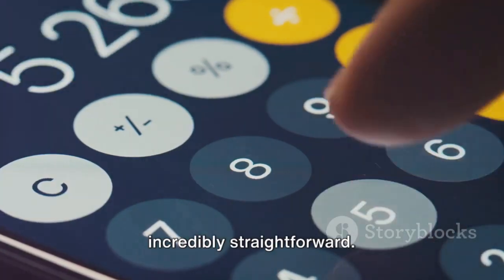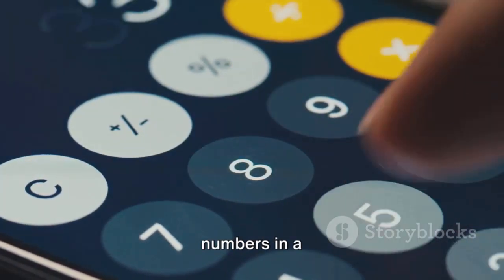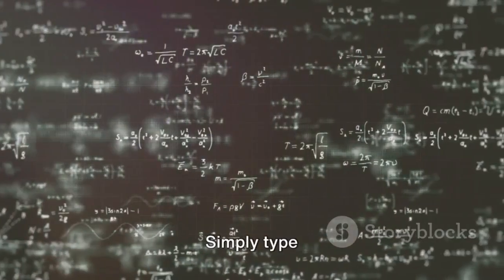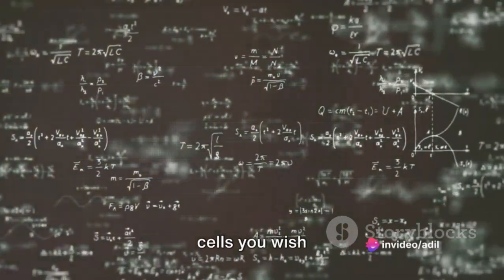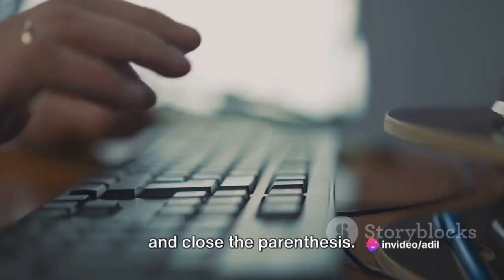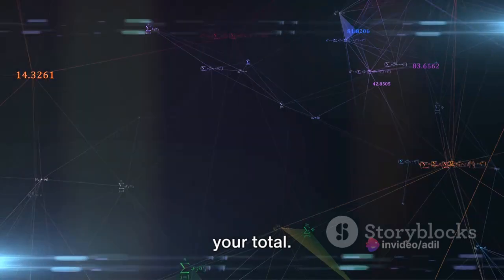The sum function is incredibly straightforward. It adds up all the numbers in a range of cells. Simply type equal sign sum, open a parenthesis, select the cells you wish to include, and close the parenthesis. Press enter, and voila, you've got your total.